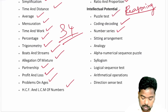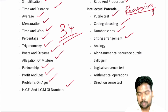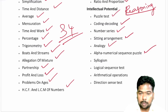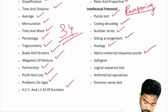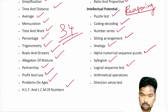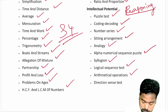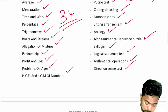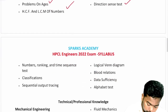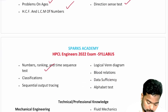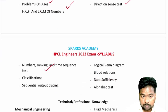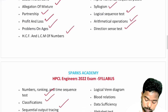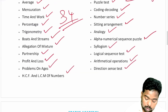The reasoning section includes number series, sitting arrangement, analogy, alphanumerical puzzles, syllogism, logical sequence test, arithmetic operations, direction test, number ranking, time sequence, classification, and sequential output tracing. This section has a total of 64 questions.